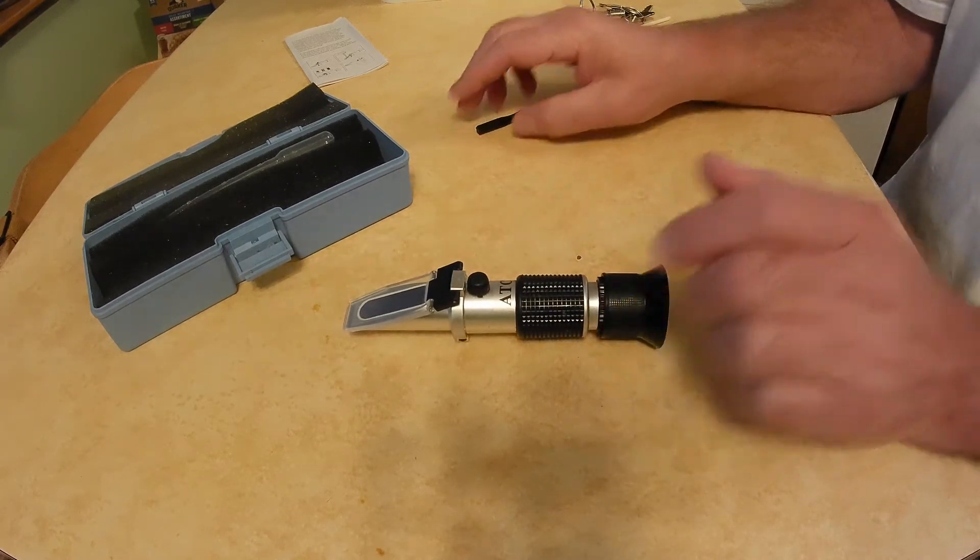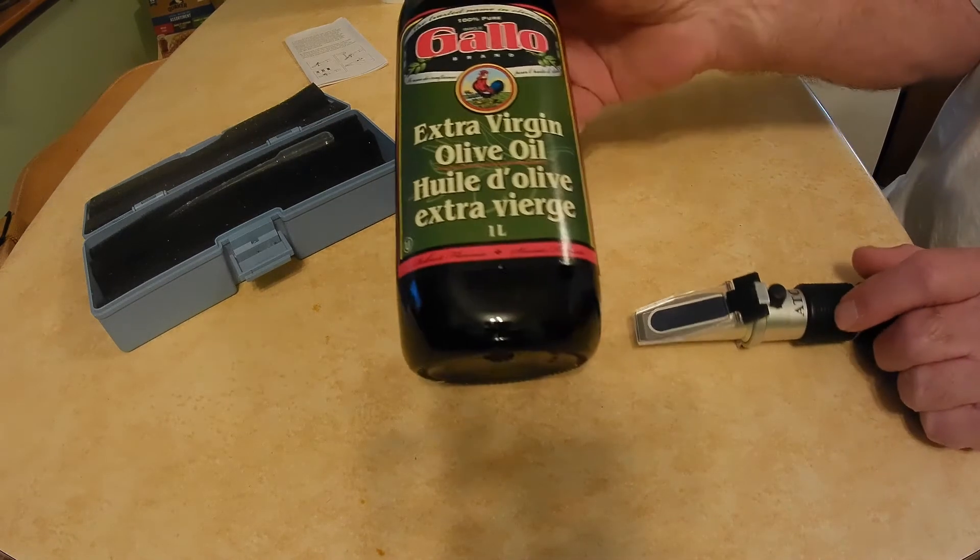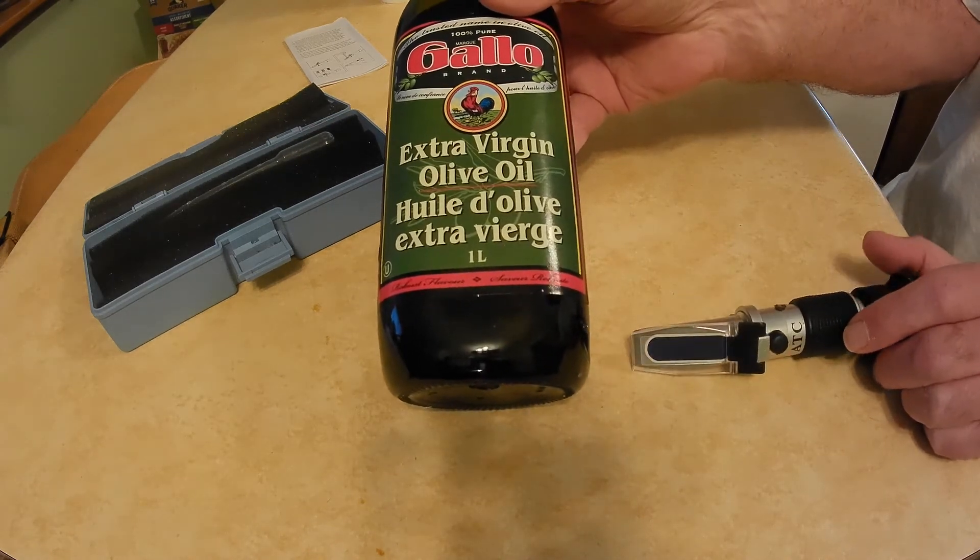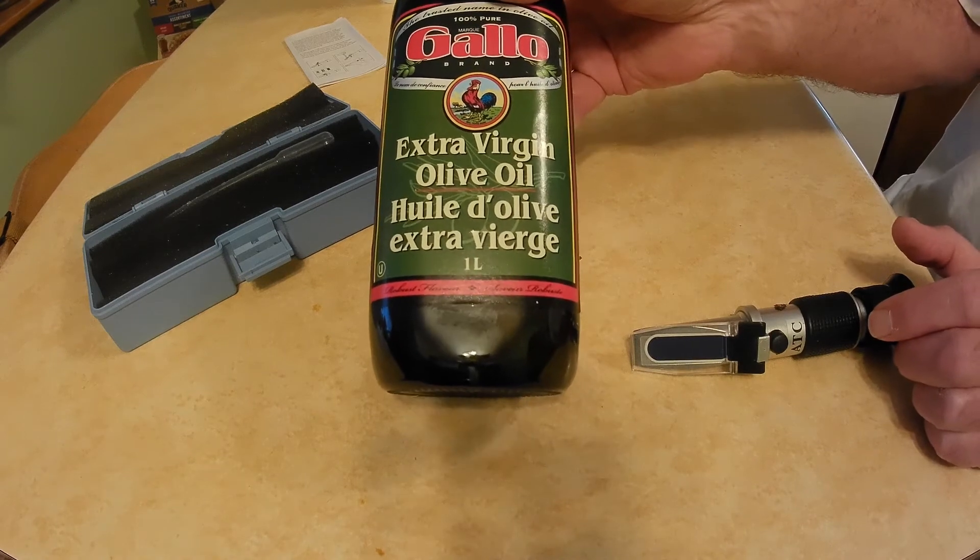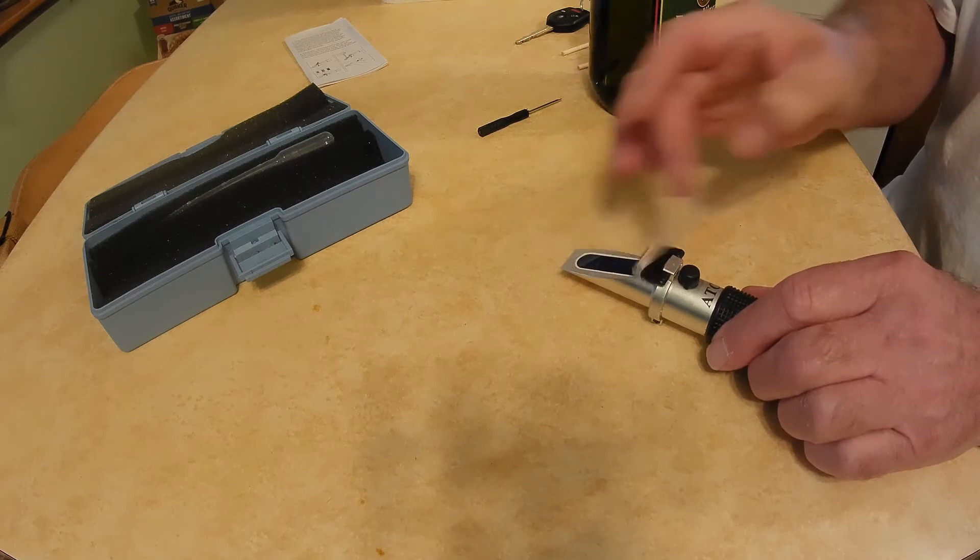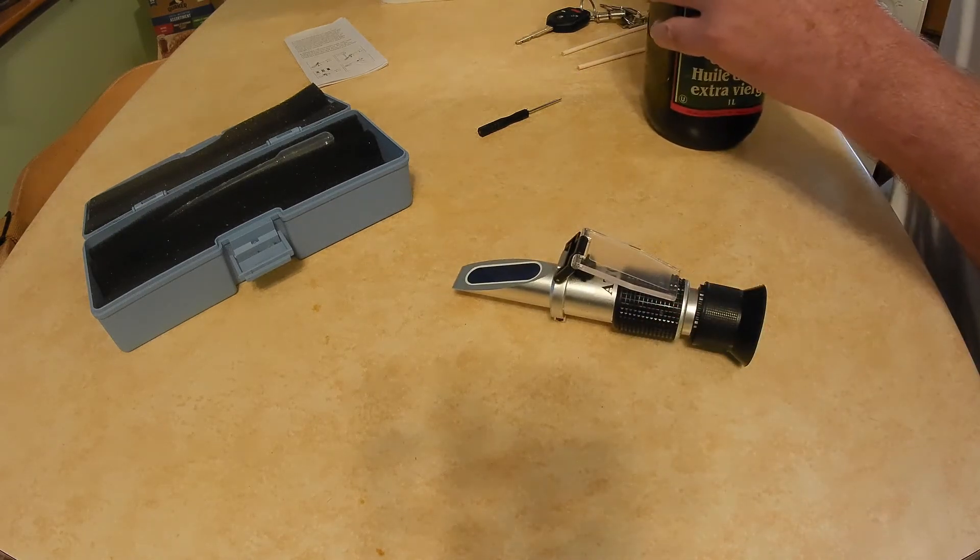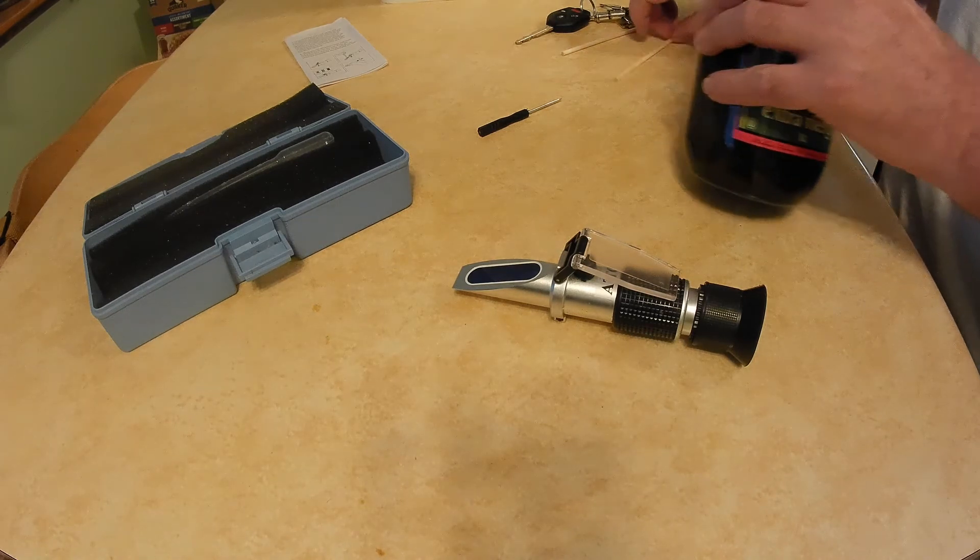So in order to calibrate a honey refractometer, all you need is something out of your kitchen cupboard called extra virgin olive oil. So let's have a look at this and see if this is true or not.